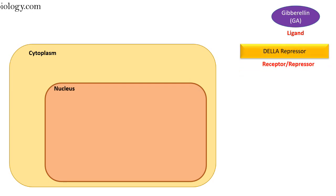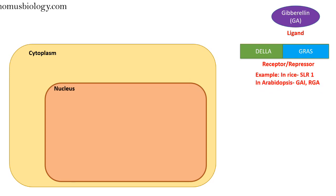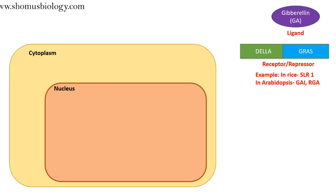Then we have a receptor — in this case, the DELLA receptor, also known as the DELLA repressor. The receptor for gibberellic acid acts as a repressor of the signaling pathway. This DELLA repressor has a DELLA domain and a GRAS domain. The example of this repressor in rice is known as SLR1, while in Arabidopsis the examples are GAI and RGA.